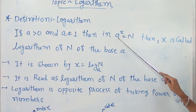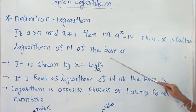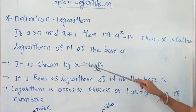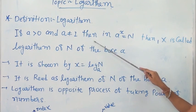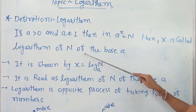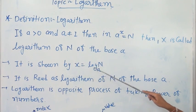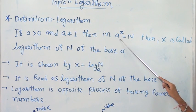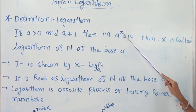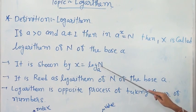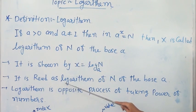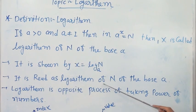Here, a raised to x is known as the exponential form. The logarithm form is written as x equal to log N base a. So a raised to x is the exponential form and its logarithm form is x equal to log N base a, read as: logarithm of capital N to the base a.